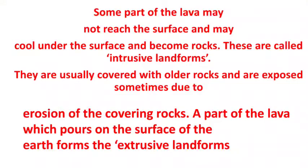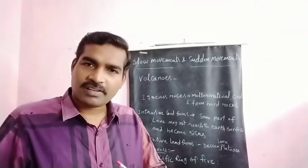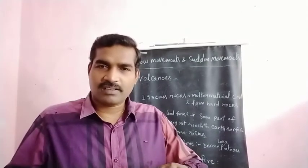There are two types of landforms: intrusive landforms and extrusive landforms. Intrusive landforms are formed when some part of lava does not reach the earth's surface. It cools and becomes rock under the earth. This is known as intrusive landforms.